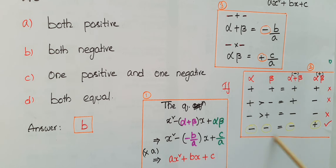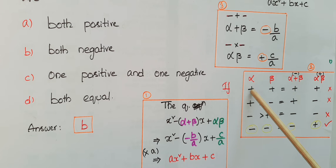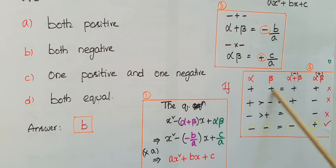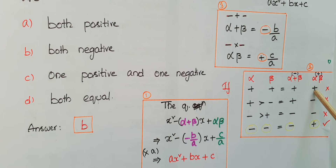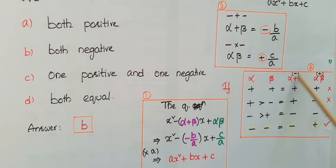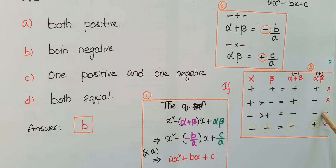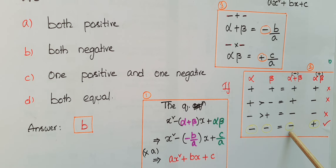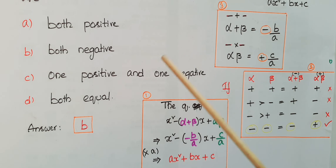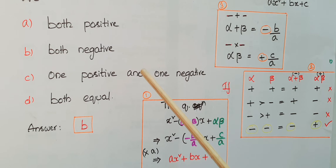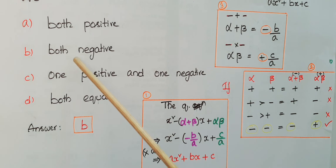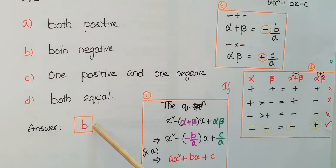From the table, if alpha and beta are both positive, then alpha + beta is positive and alpha·beta is positive — but we need minus and plus signs respectively. So that is wrong. If both zeros are negative, then alpha + beta is negative and alpha·beta is positive, which is what we need. So both zeros should be negative. The answer is option B.